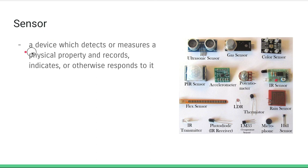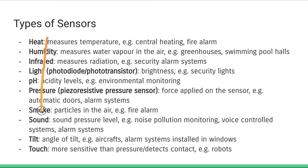A sensor is a device which detects or measures a physical property and records, indicates, or otherwise responds to it. Sensors sense some physical property in the environment around them and generate an electrical signal in response. There are a variety of different types of sensors. You don't need to memorize all of them, but look through the list to familiarize yourself with the types of sensors that could exist, because IB questions may ask what kind of sensor you could use to accomplish a task, or may refer to one of these sensors and ask you to write a response based on that.